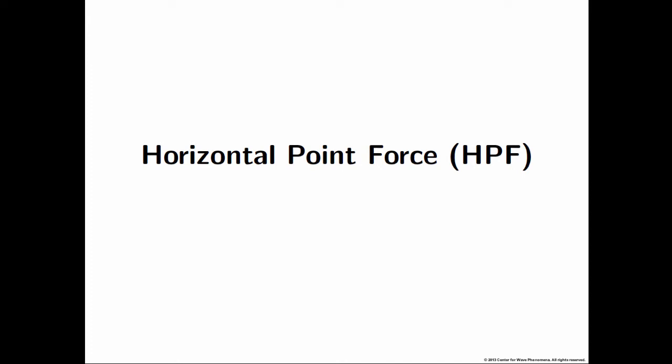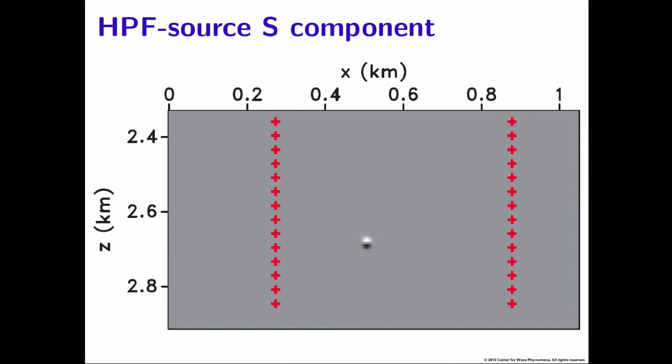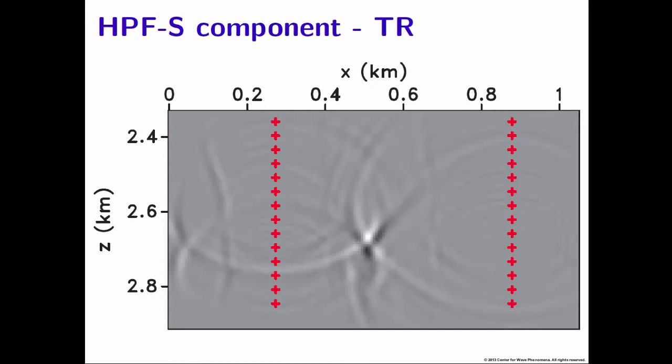For the horizontal point force, we wanted to see if we could improve the reconstruction of the radiation pattern using deconvolution instead of time reversal, decomposing it into P and S components. For the S component due to a horizontal point force, the radiation pattern has a nodal line intersecting our receivers. Using time reversal we were able to reconstruct that radiation pattern well, and using deconvolution we were also able to reconstruct it. There was no significant improvement between the two methods for this S component, and we believe this is related to the nodal line intersecting our receivers.